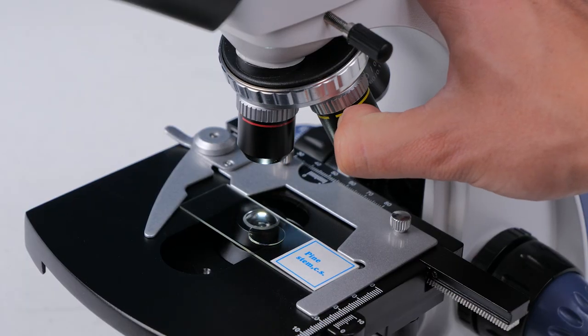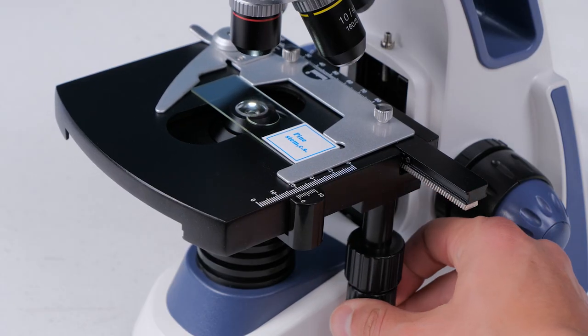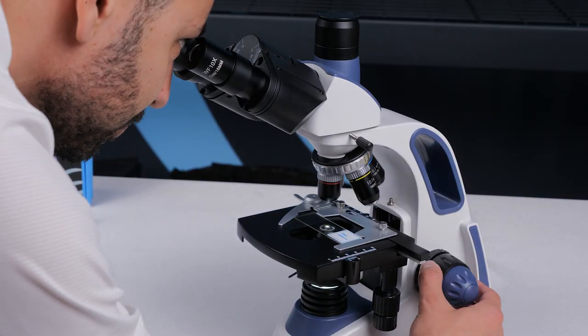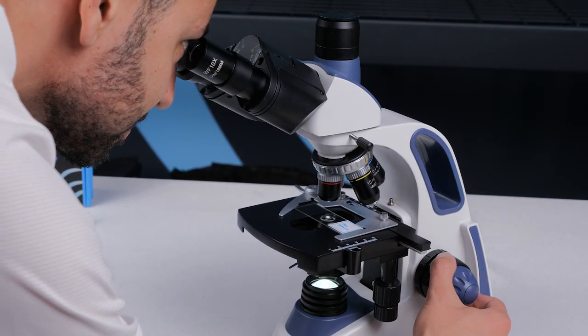Rotate down the 4X objective. Move the stage using the X and Y knobs so that your sample is in the center. Look through the eyepieces and turn the coarse focus knob to move the stage up until you have an in-focus image.